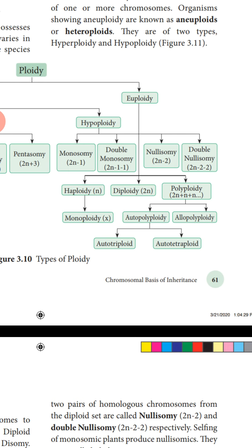Organisms showing aneuploidy are called aneuploids or heteroploids — they are of two types: hyperploidy and hypoploidy. Aneuploidy involves alteration in the diploid number of chromosomes by addition or deletion. If addition is taking place, we call it hyperploidy; if deletion is taking place, we call it hypoploidy.